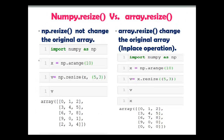Next: np.resize does not change the original array, while array.resize changes the original array — which is called an in-place operation. Remember this: numpy.resize first creates a copy of the array, then performs the resize. But array.resize changes the original array directly without creating a copy, which is the in-place operation.